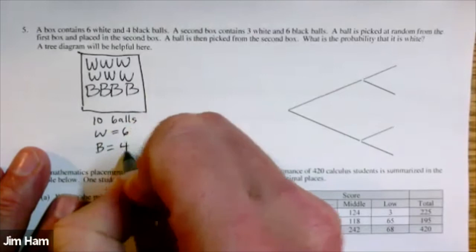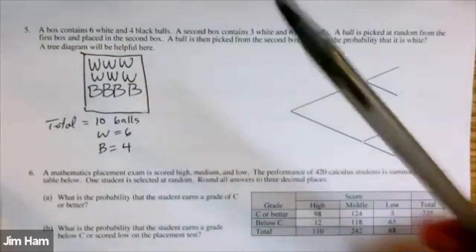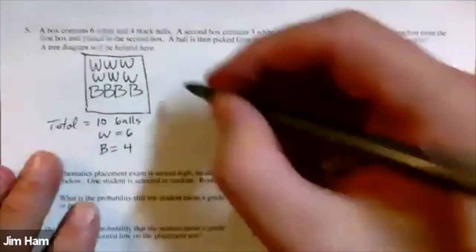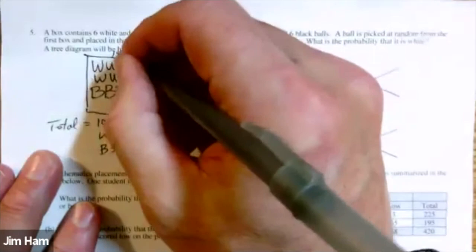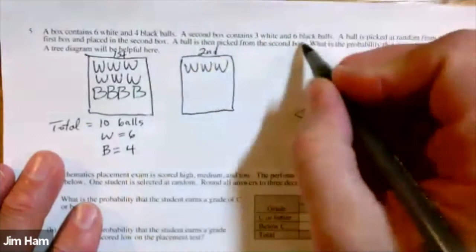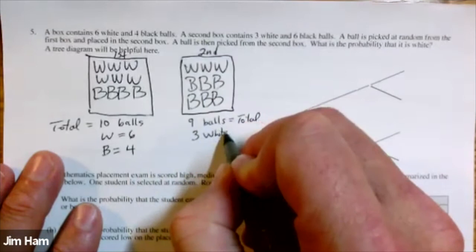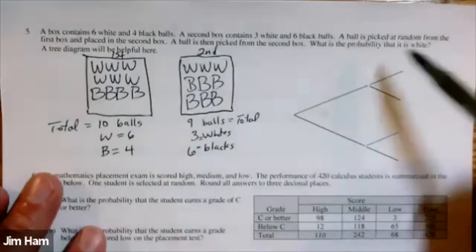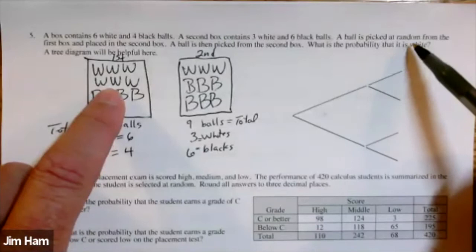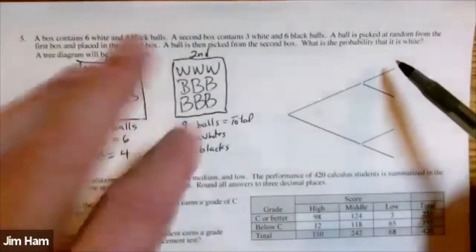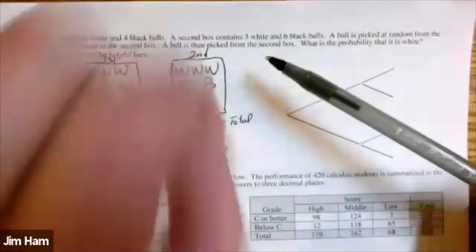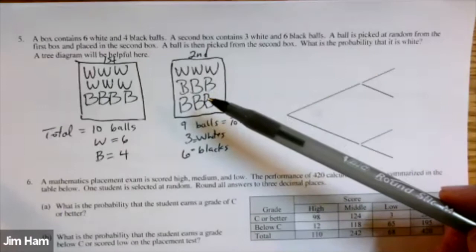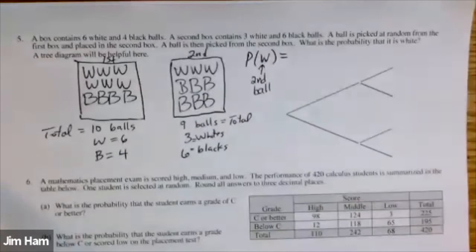A ball is picked from the first box and placed into the second box — presumably they're mixed together — and then we select a ball from the second box, ending up with a single ball. What is the probability that ball is white? The first ball drawn can either be white or black. There are six white balls out of 10, so the probability of selecting white is 6/10. There are four blacks out of 10, so the probability of black on the first draw is 4/10.